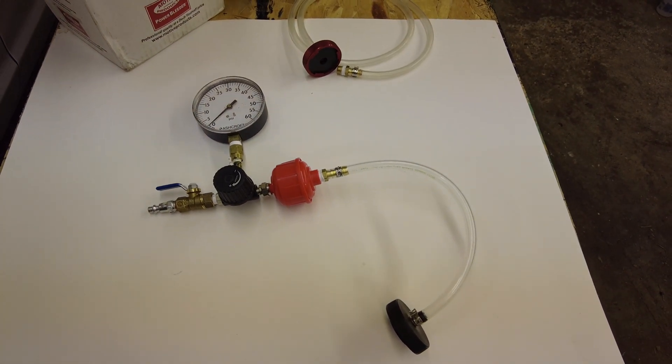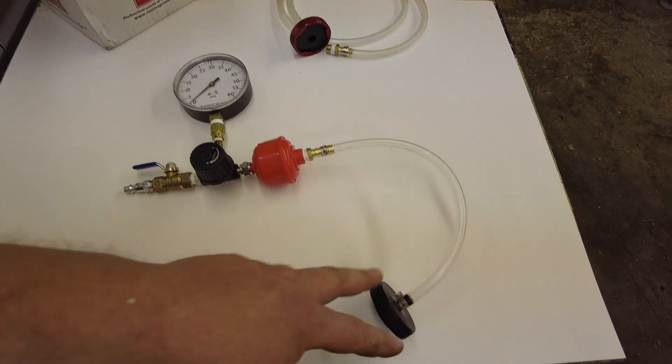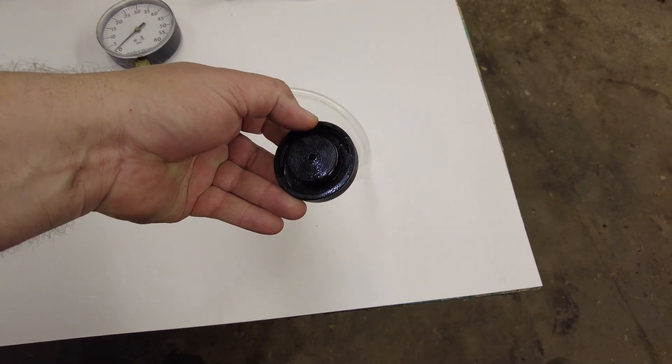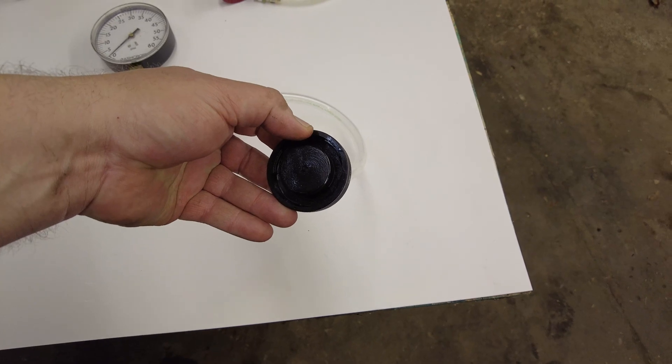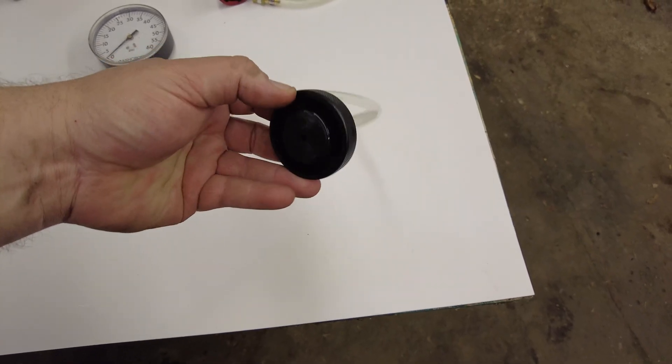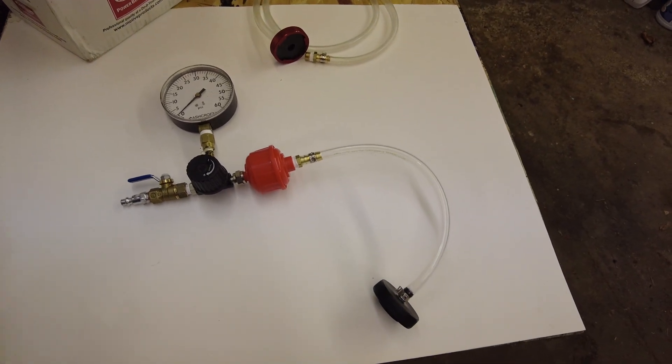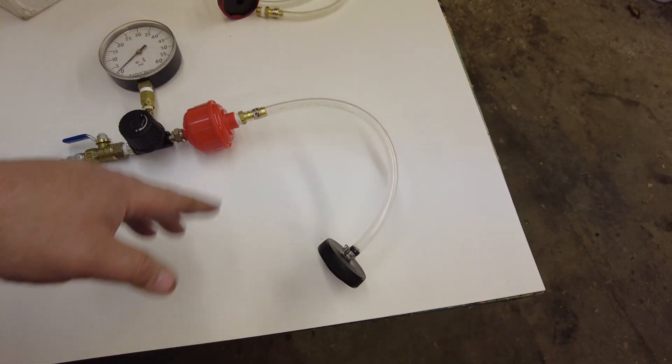I'll put links down below for the adapter that I use. This is the three-tab Ford adapter that's for later model Crown Victorias, F-150s, I think maybe a few Mustangs. Otherwise I'll put a link down below to all the rest of the adapters that this will work with.